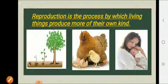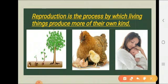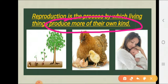What is reproduction? Reproduction is a process by which living things produce more of their own kind. Plants, animals, and human beings are all living things, so they can all reproduce — they can all produce more of their own kind.